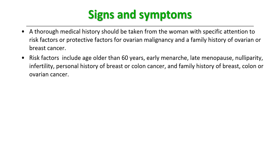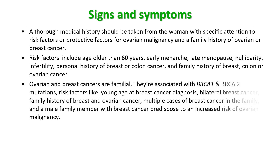Personal history of breast or colon cancer, and family history of breast, colon, and ovarian cancers are important risk factors. These are linked through inherited or familial cancer syndromes like HNPCC, and genes like BRCA1 and BRCA2. Risk factors associated with BRCA mutations include young age at breast cancer diagnosis, bilateral breast cancer, family history of breast and ovarian cancer, multiple cases of breast cancer in the family, and a male family member with breast cancer. These mutations predispose women to increased risk of ovarian malignancy.